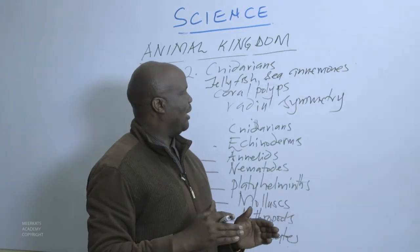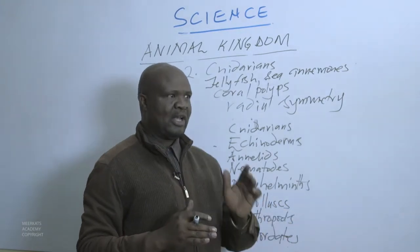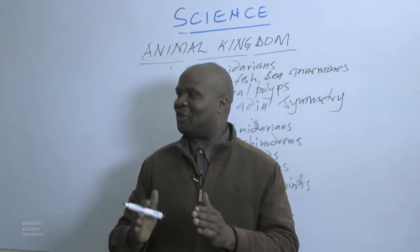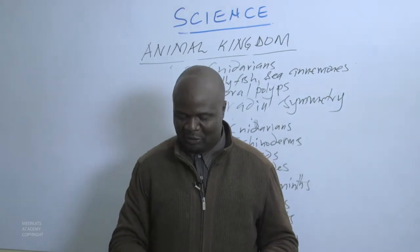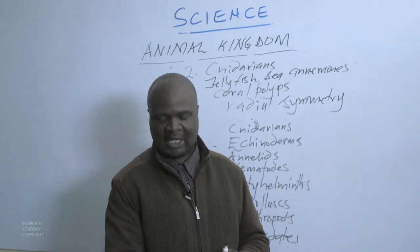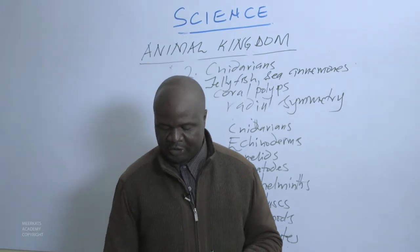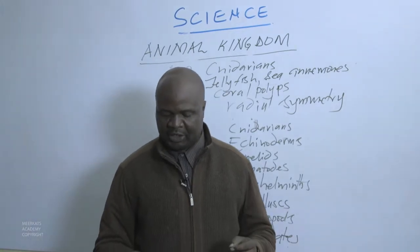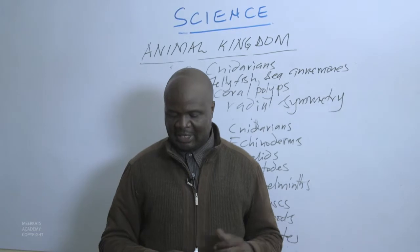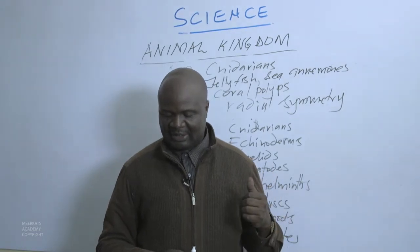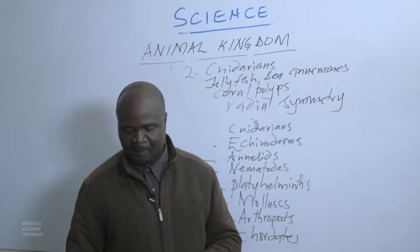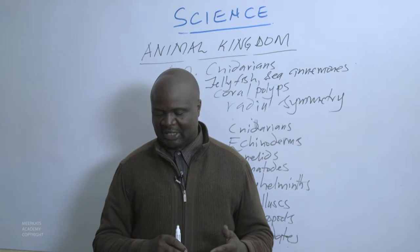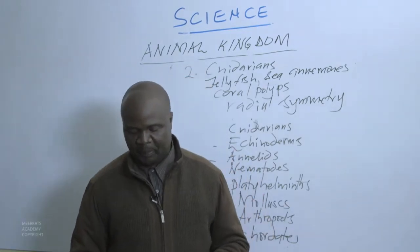Others have bilateral symmetry, whereby there is only one way you can divide the organism and get two identical halves. With Cnidarians, food goes into the body through the one opening, and the same opening is also used when ejecting waste products.